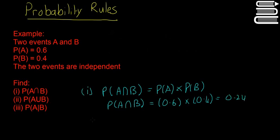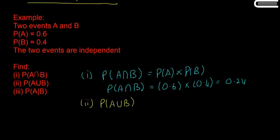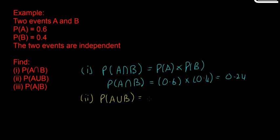The second one is P of A union B. This is the first probability rule, the union probability. P of A union B equals P of A plus P of B minus P of A intersect B.